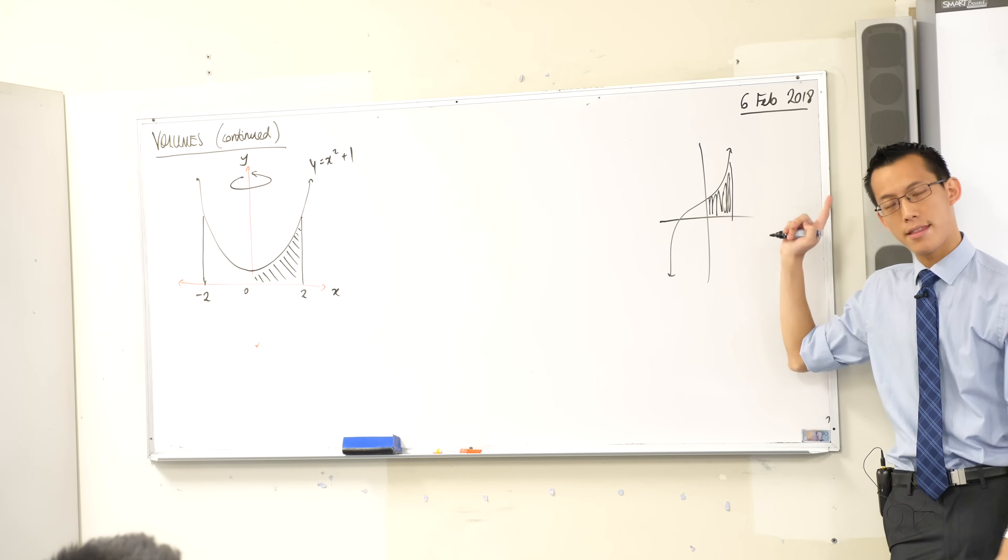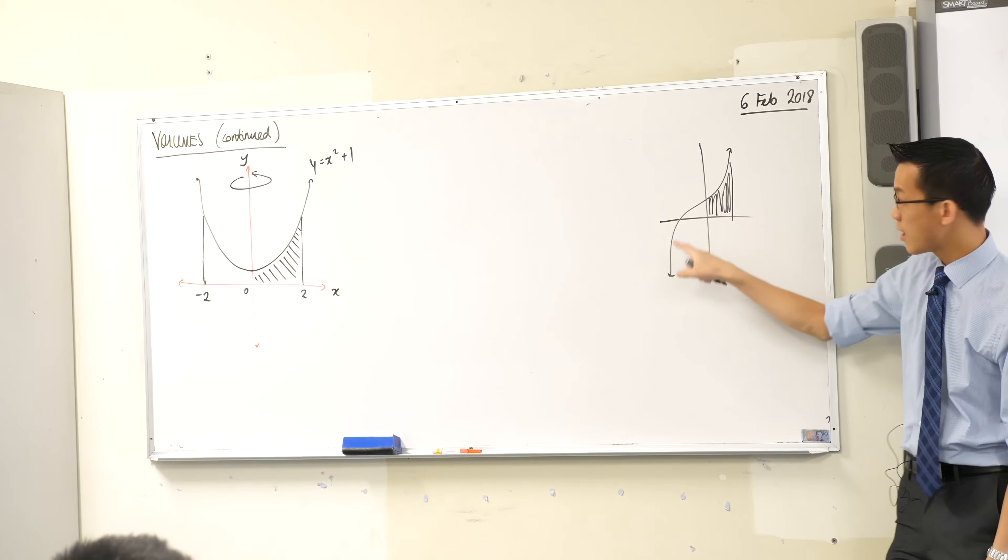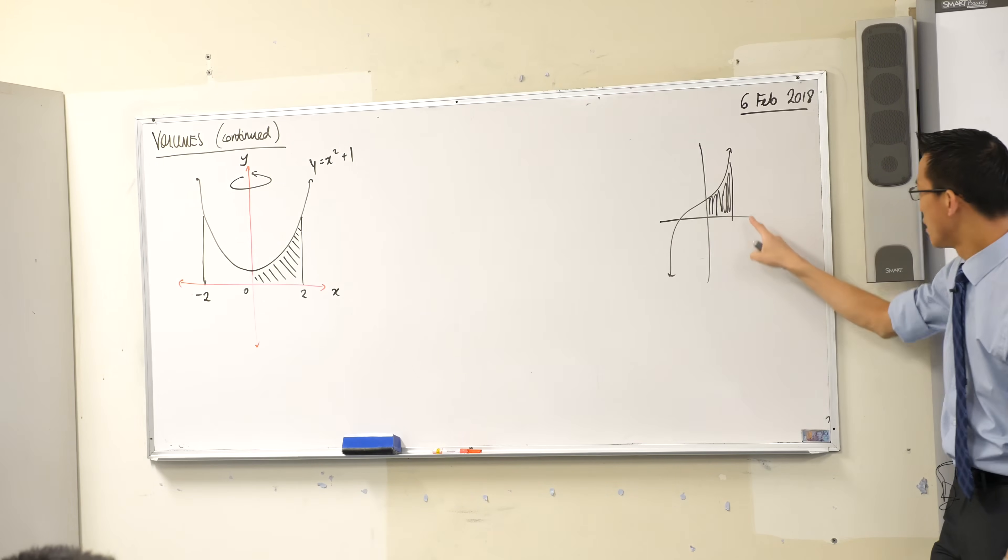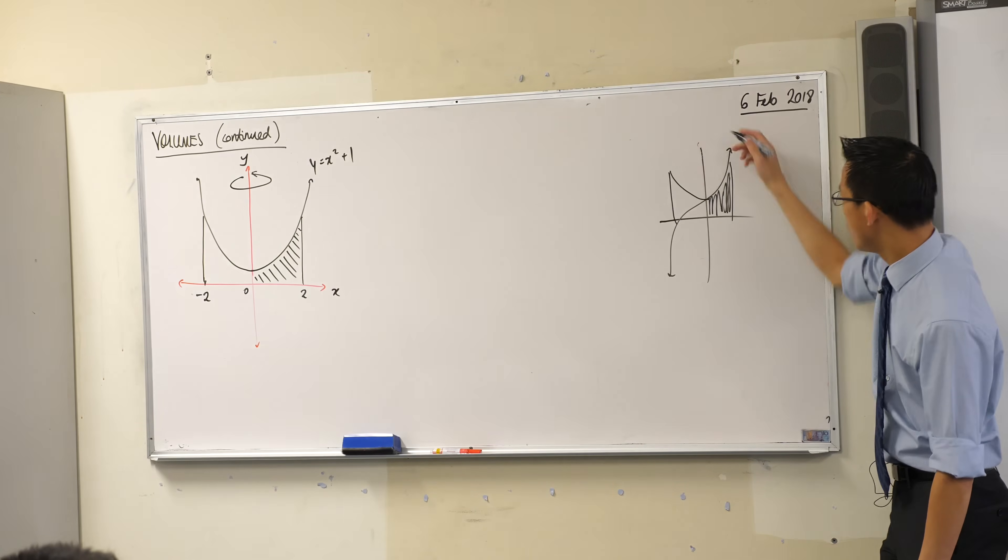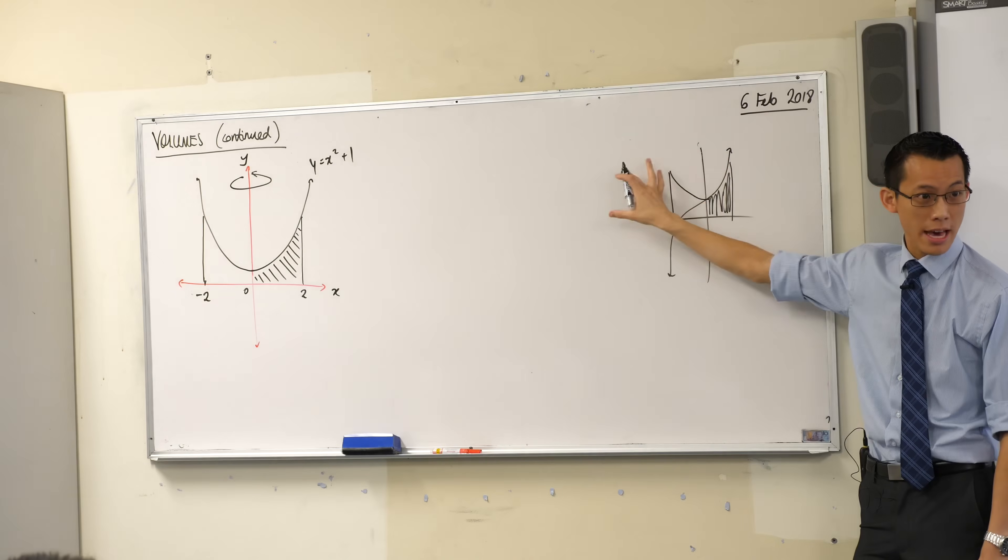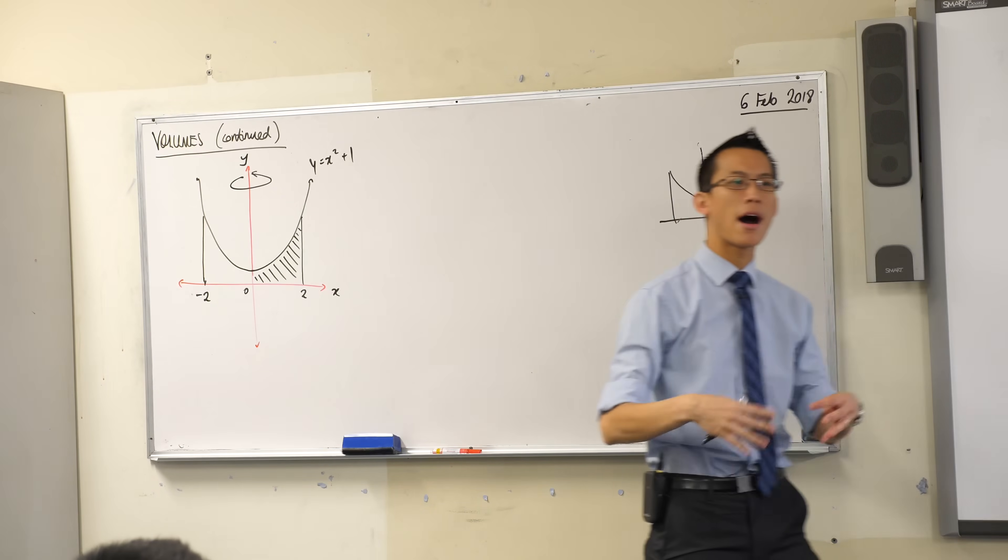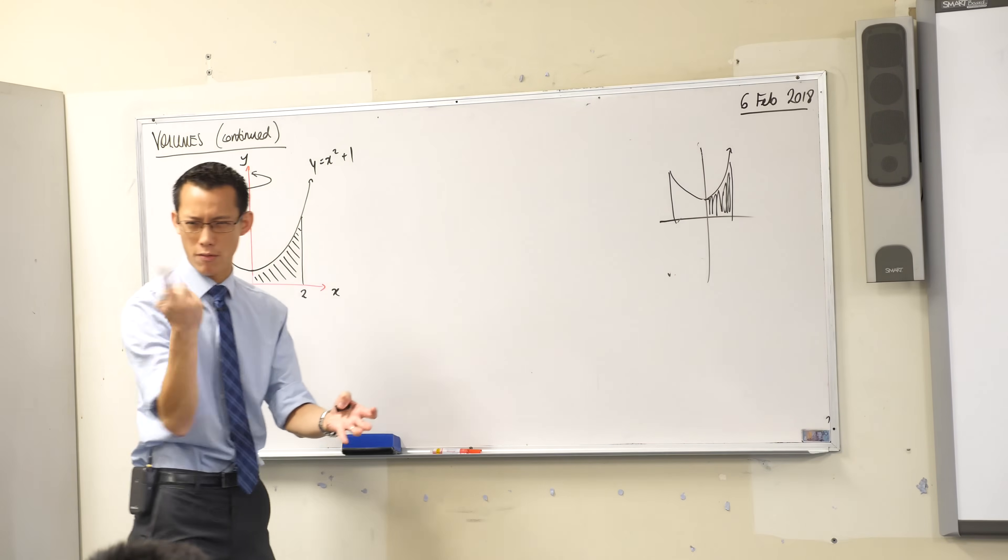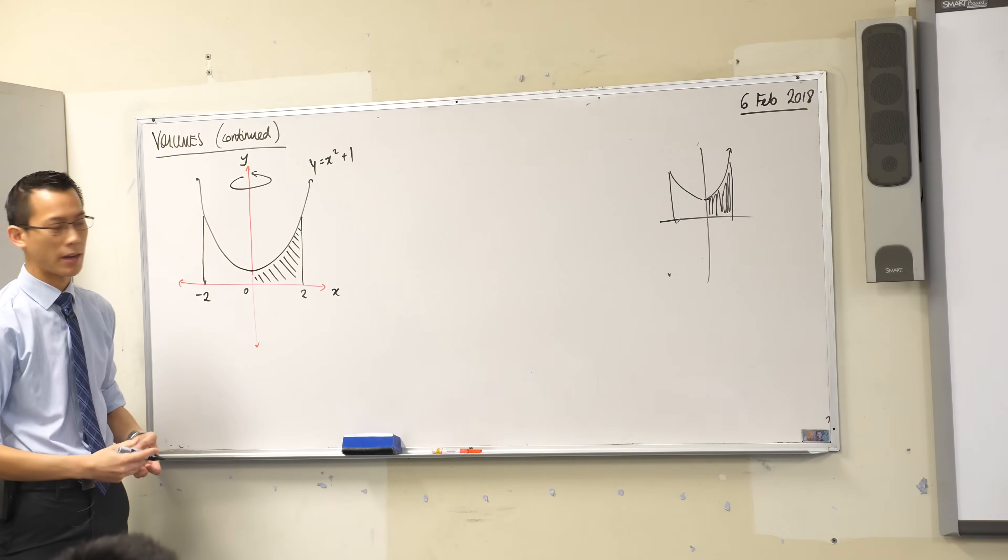If I were to rotate this around the y-axis, even though this guy goes down here, this is actually the area I'm interested in, right? So it looks like it would be something like this. You're going to get that spinning around. Like this part over here becomes irrelevant because it is not part of the region being rotated. Does that make sense? I gave you this one because it's sort of easy, you'll get the same thing on both sides.